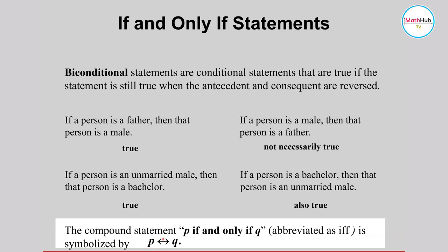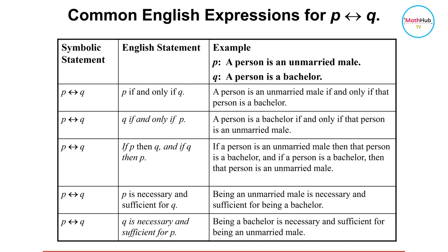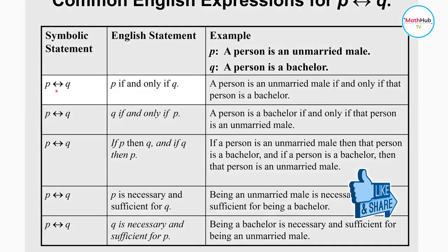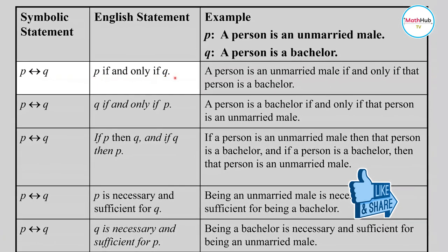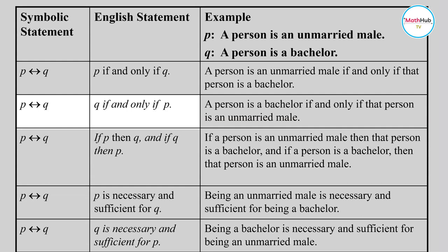The compound statement 'p if and only if q' is abbreviated as 'iff' and symbolized by a double arrow. Note that 'p if and only if q' is the same as 'q if and only if p', because you can reverse the antecedent and the consequent.